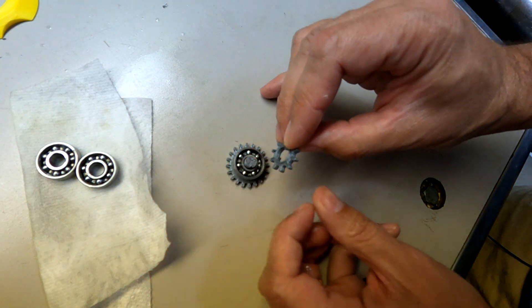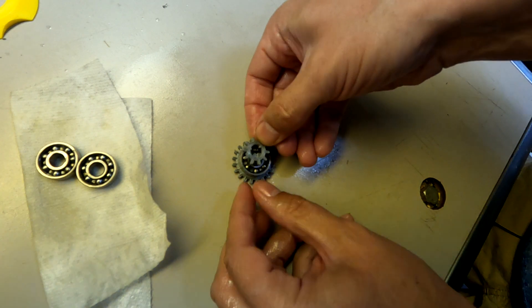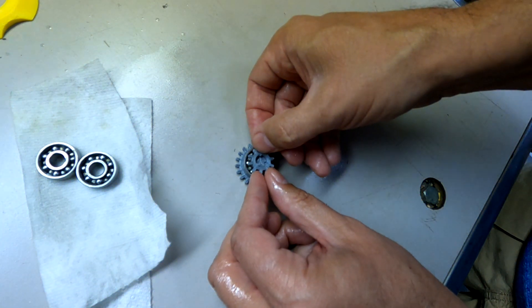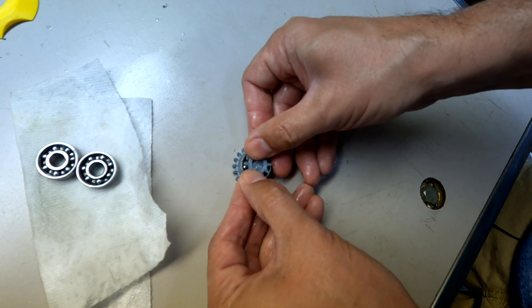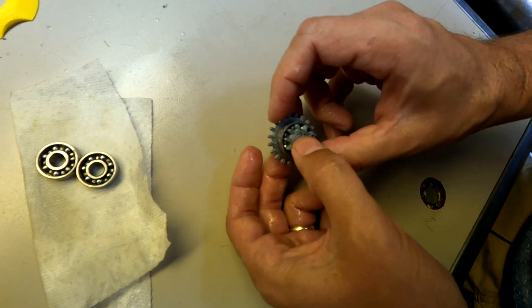You want that lip to be facing the bearing and these three little teeth will engage with the notches that are on the shaft. Those go together like that.